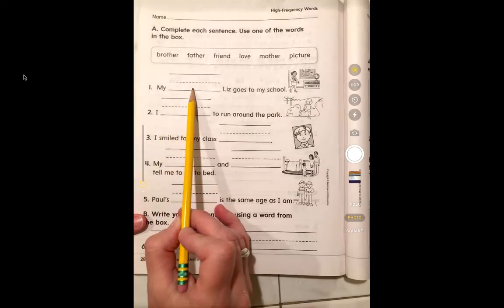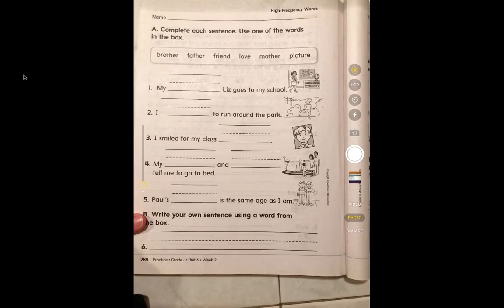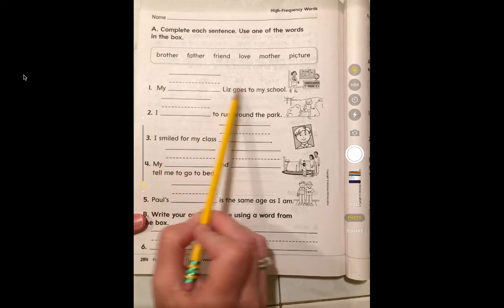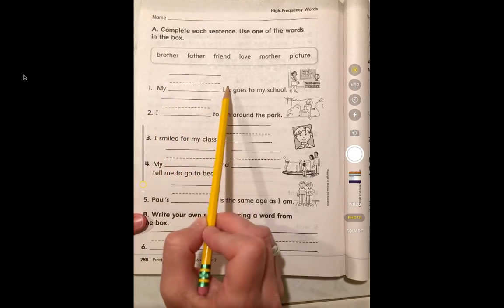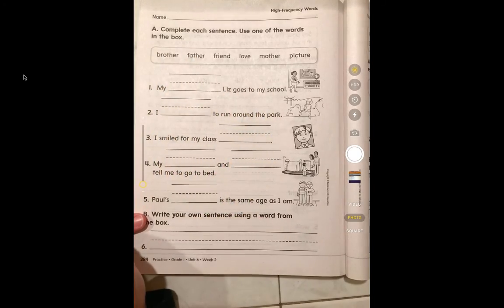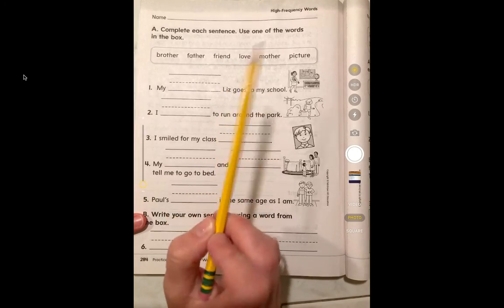My blank Liz goes to my school. Which one of those would make sense? My brother Liz goes to my school? No. My father Liz goes to my school? No. My friend Liz goes to my school? That makes sense.